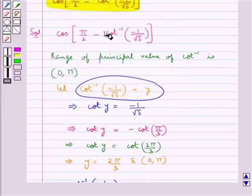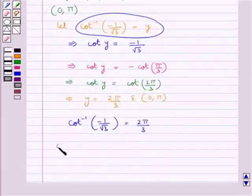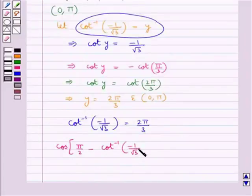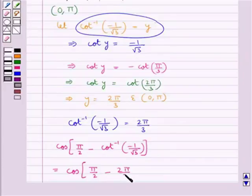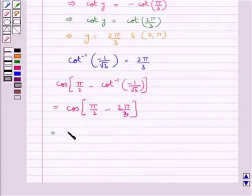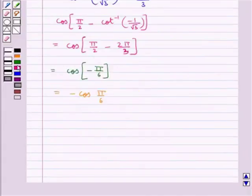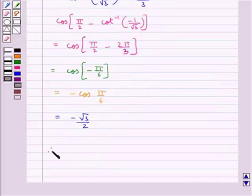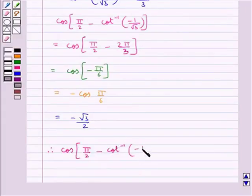Now putting this value of cot inverse of minus 1 upon root 3 into the given expression, we get cos(π/2 minus 2π/3), which is further equal to cos(minus π/6). This equals minus cos(π/6), and we know that the value of cos(π/6) is root 3 by 2. So this is equal to minus root 3 by 2. Hence cos(π/2 minus cot inverse of minus 1 upon root 3) is equal to minus root 3 by 2.